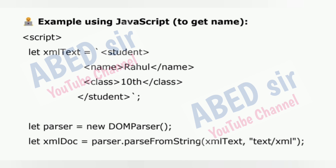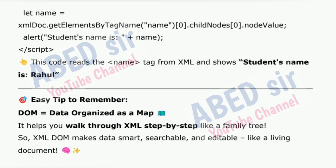Example using JavaScript to get name: let xmlText = 'Student Name Rahul /Name Class 10th /Class /Student'. let parser = new DOMParser(). let xmlDoc = parser.parseFromString(xmlText, 'text/xml'). let name = xmlDoc.getElementsByTagName('name')[0].childNodes[0].nodeValue. alert('Student name is ' + name). This code reads the name tag from XML and shows 'Student's name is Rahul'. Easy tip: DOM equals data organized as a map. It helps you walk through XML step by step like a family tree. XML DOM makes data smart, searchable, and editable like a living document.